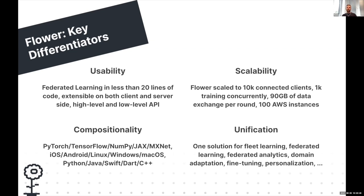Flower was also engineered from the ground up to be very scalable, because in the IoT community the number of devices in such workloads can be tremendous — some workloads include up to millions of devices. Compositionality is another key aspect for tackling heterogeneity: Flower is compatible out of the box with different machine learning frameworks, so it doesn't force you into a single framework. It supports building edge workloads in a variety of frameworks, with compatibility across different platforms and even different programming languages.